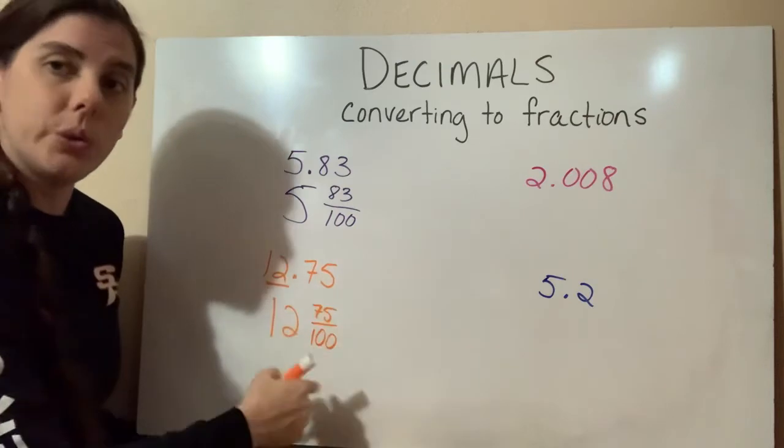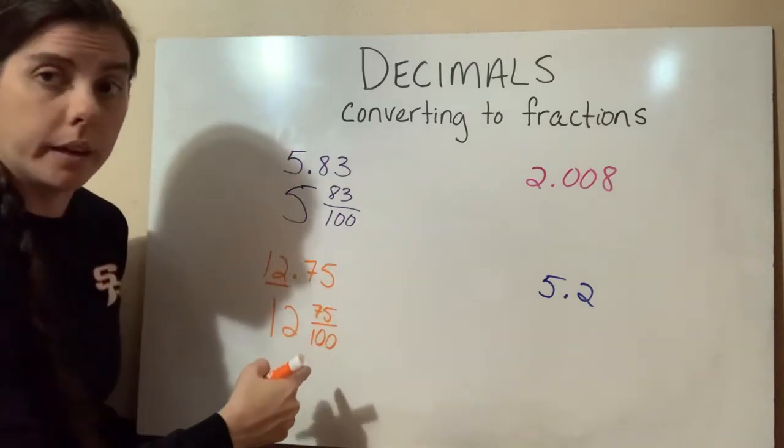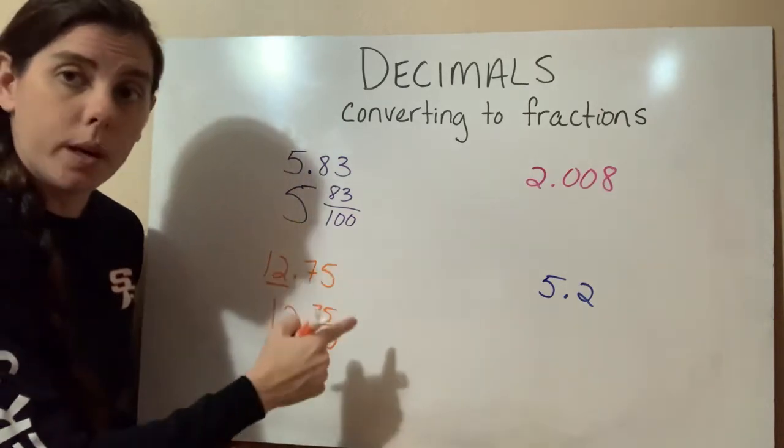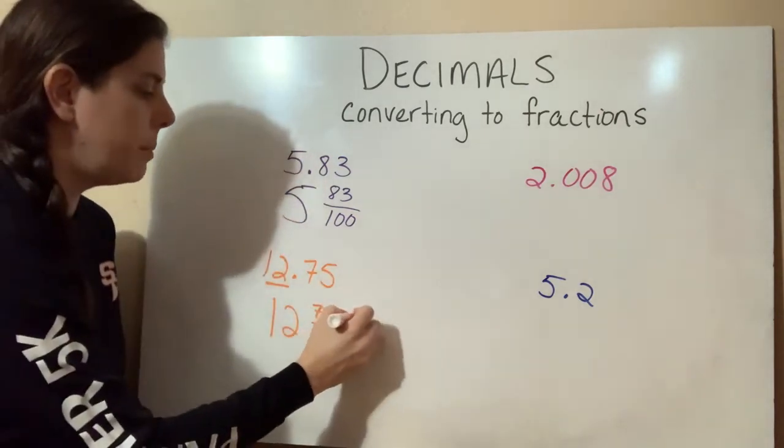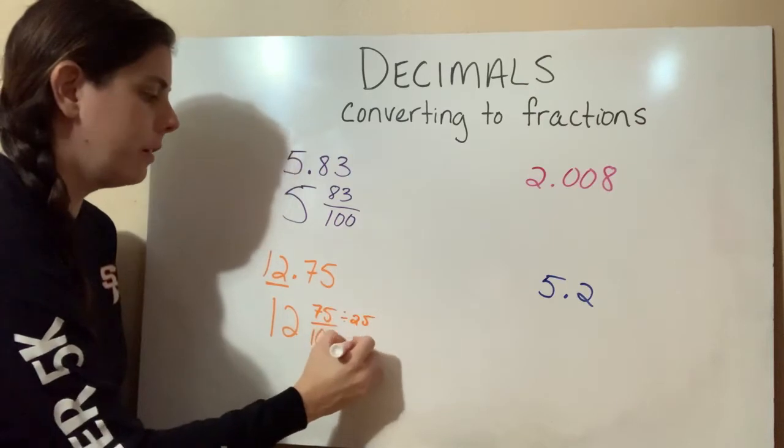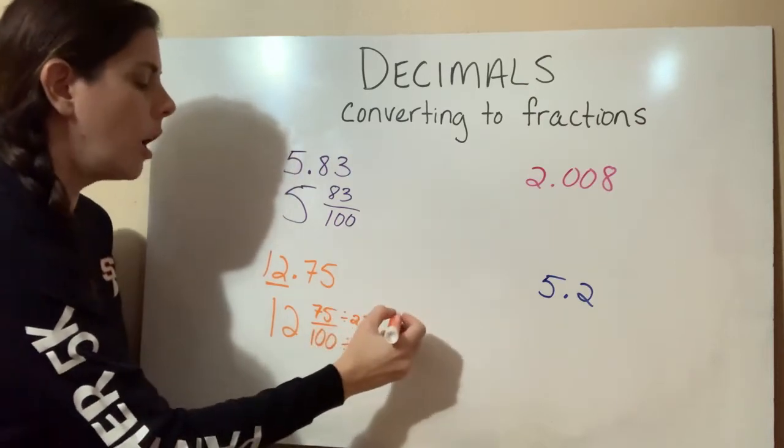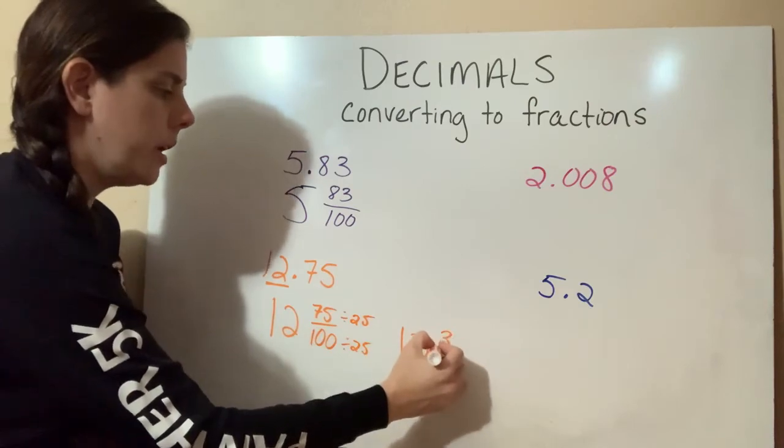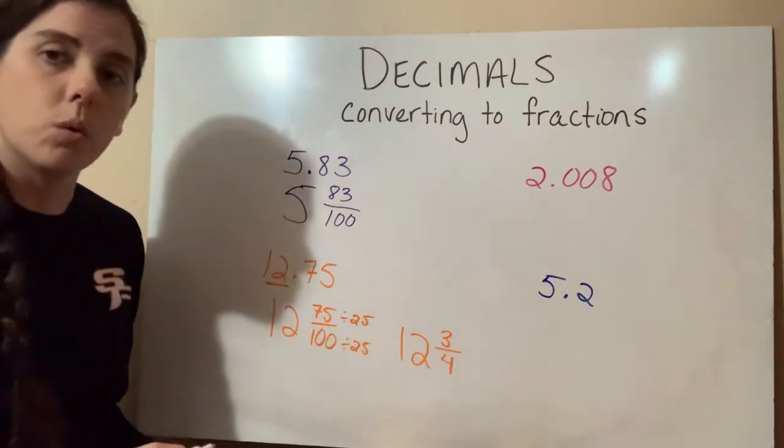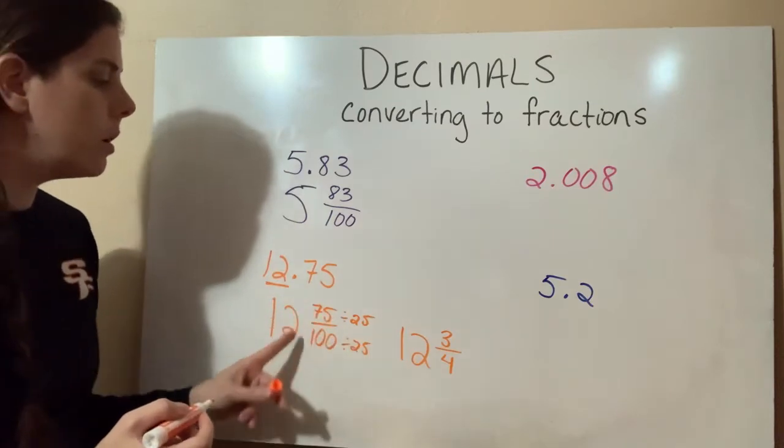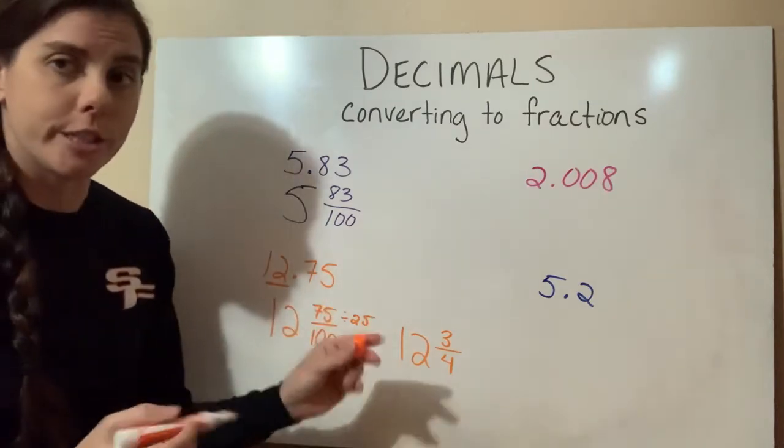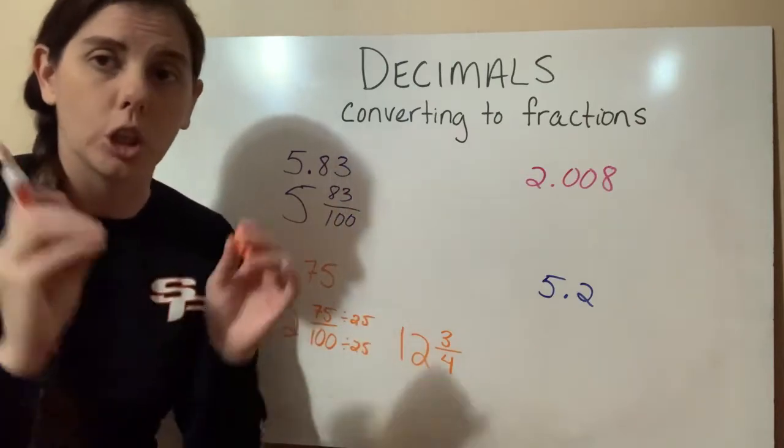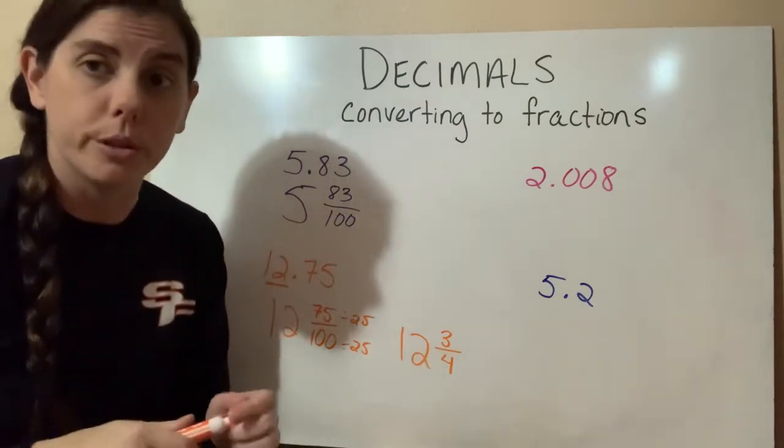Can we reduce this? Yes, we can. We know that we can divide 75 and 100 by 25. So if we divide both of those by 25, our new answer will be 12 and three-fourths or three-quarters. So again, when we're converting to fractions, anytime you're dealing with fractions, your answer should always be in lowest terms. So always remember to reduce your answer.